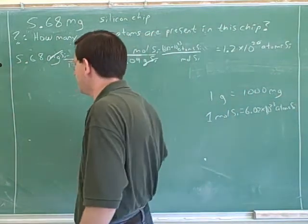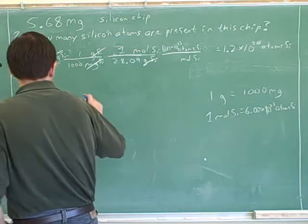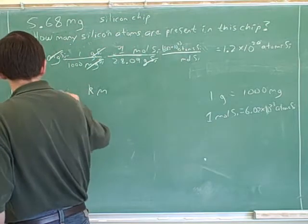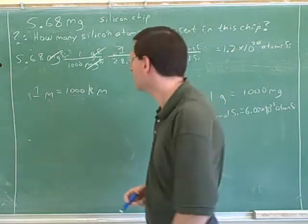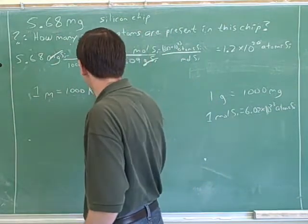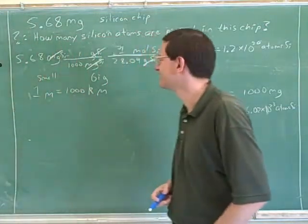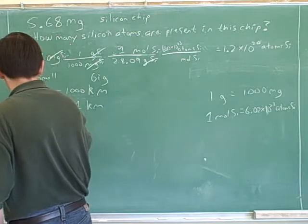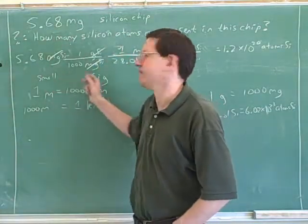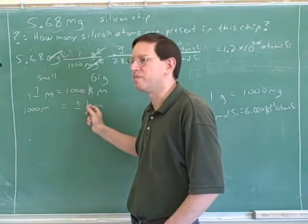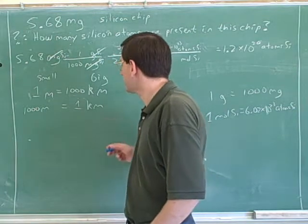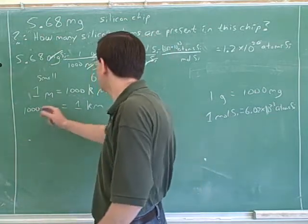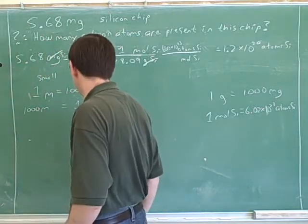There are a couple of metric prefixes that come up so often that everyone's expected to know them. For example, what would be the conversion between meters and kilometers? One kilometer — which is the big unit — so there are 1,000 meters in one kilometer. Notice how much easier it is to figure stuff out if you just write down which is the big and which is the small. There should be many small units in one big unit. So the ratio between meters and kilometers is 1,000 meters in a kilometer.